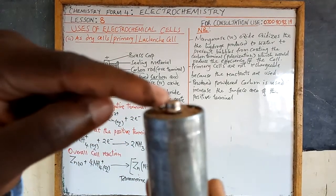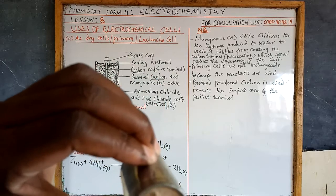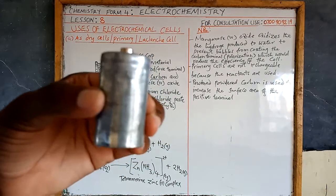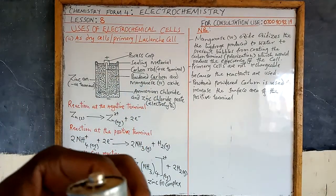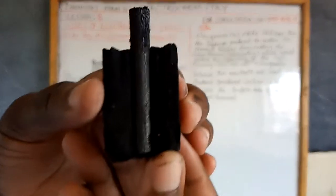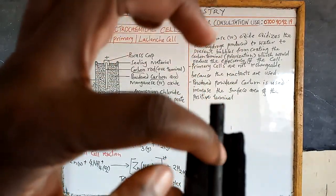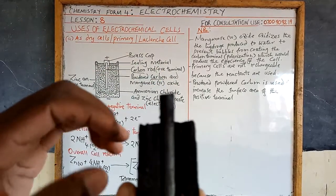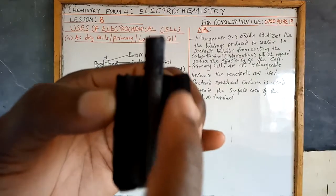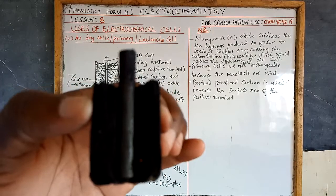You can see here the brass cup. Then we have this brown part, which forms part of the sealing material. Going further to the inside, you can see there on the board the carbon rod — the whole of it up to there. This black part is the mixture of powdered carbon mixed with the manganese(IV) oxide.